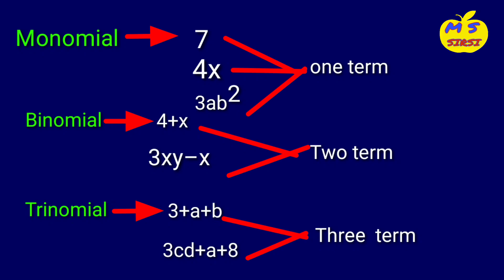Trinomial means three terms. Three plus a plus b has three terms: three, a, and b. Next, three cd plus a plus eight also has three terms.